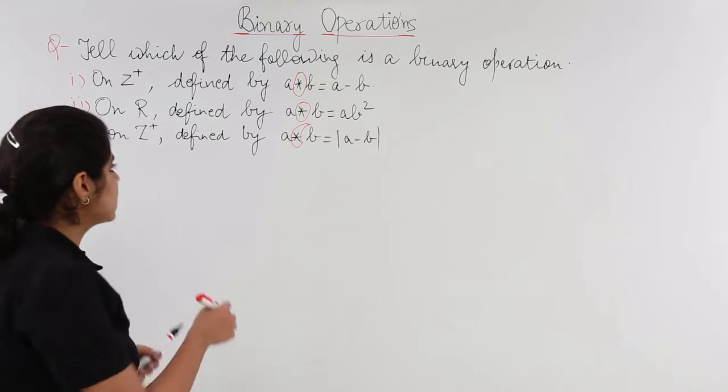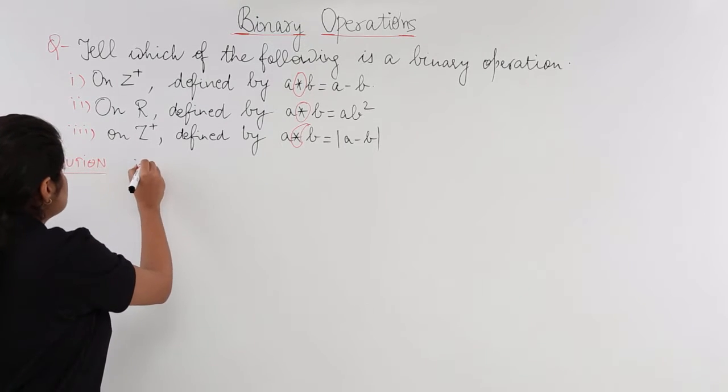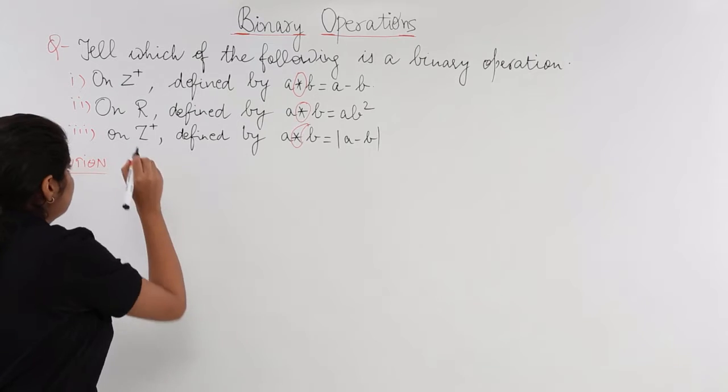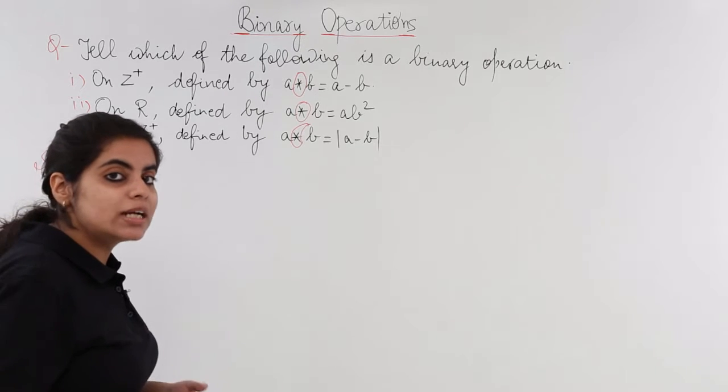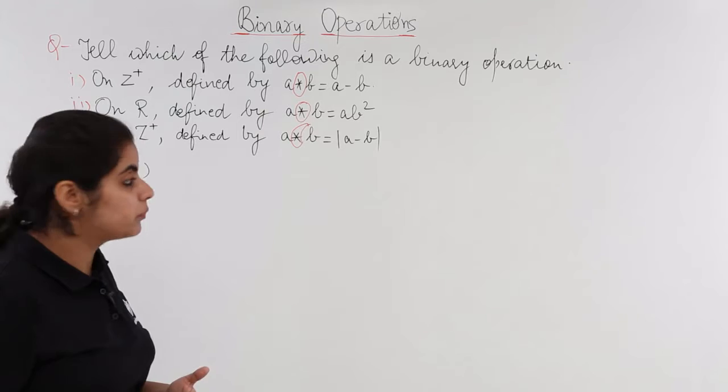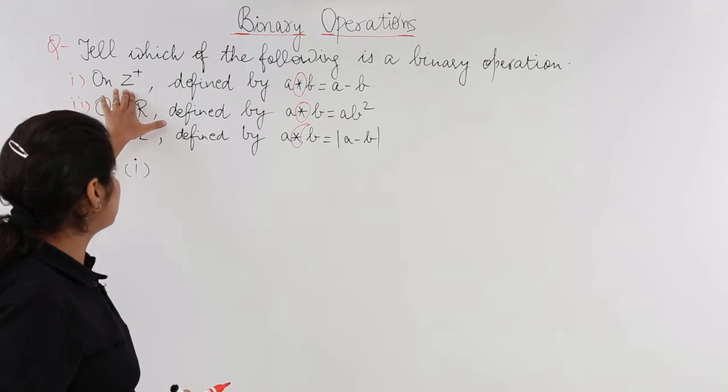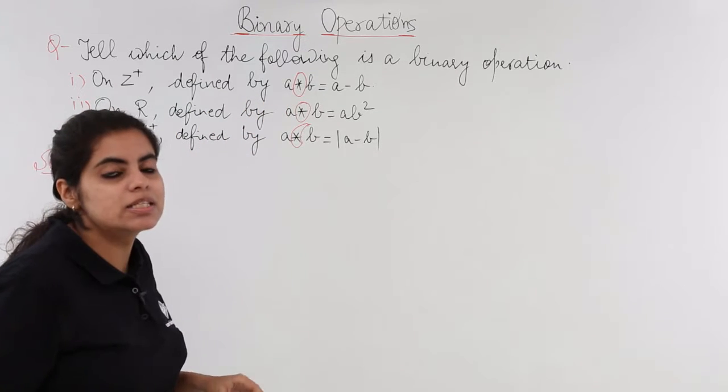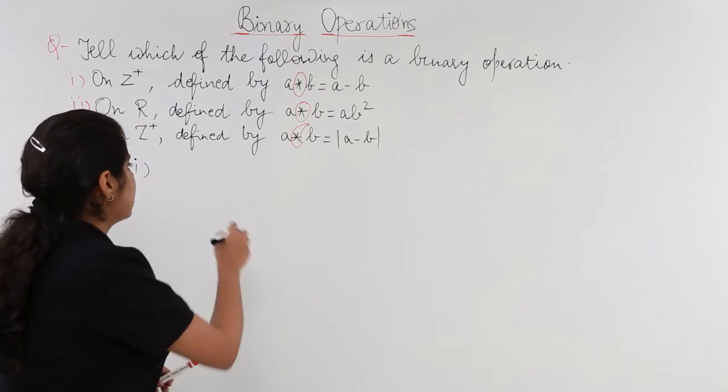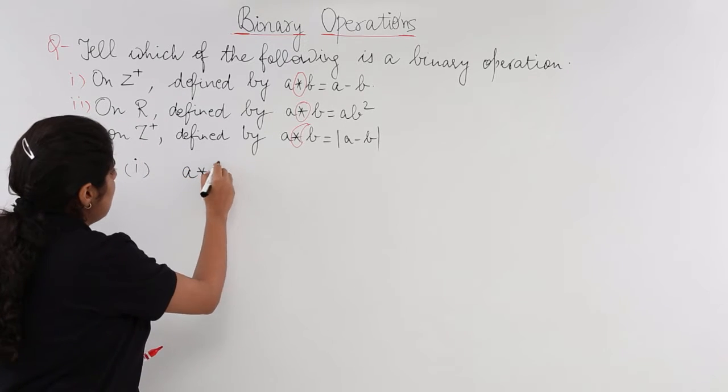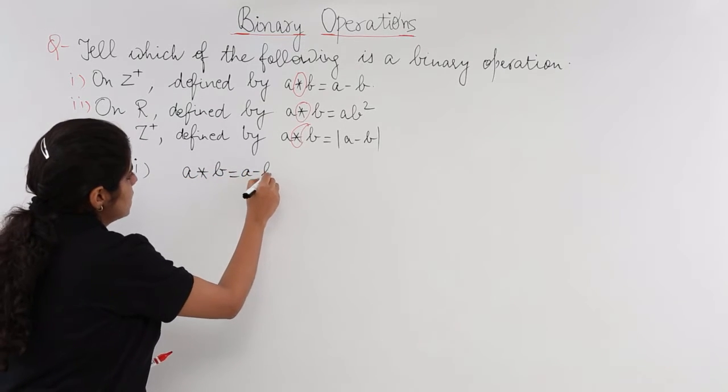Let's get started with the first solution. These are very easy but fundamental questions to study the further basic and important questions as well. The first question is on Z positive defined by A star B is equal to A minus B. I write the question again.